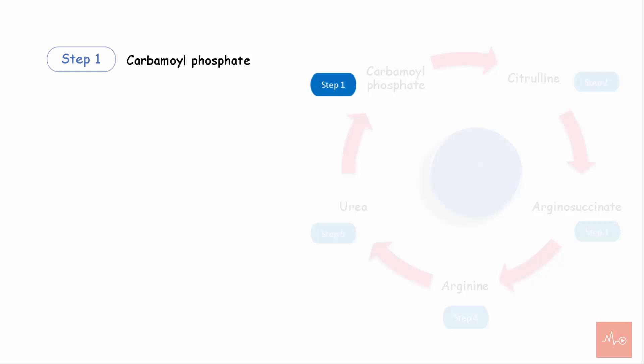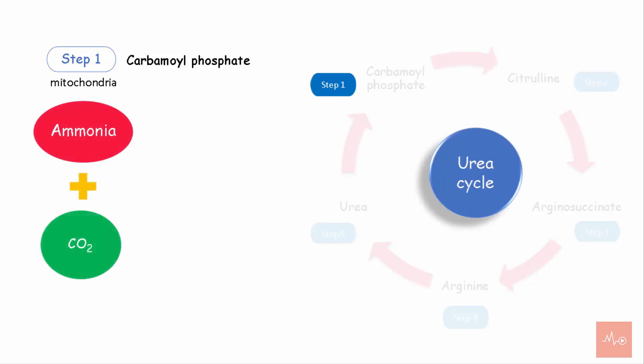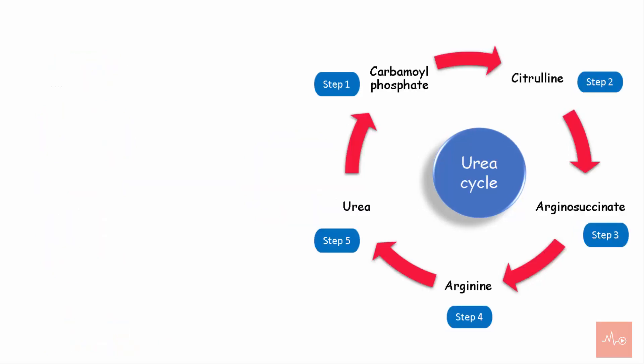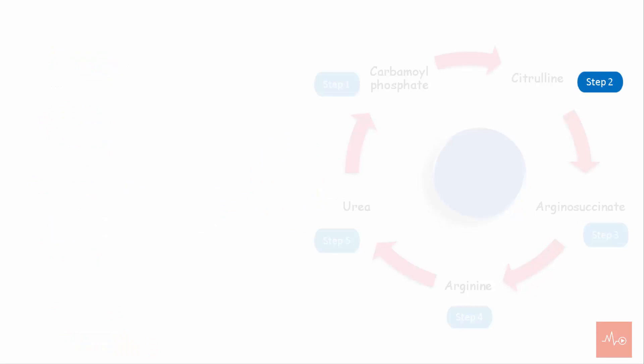...is synthesis of carbamoyl phosphate. This reaction takes place in the mitochondria. A molecule of ammonia condenses with carbon dioxide to form carbamoyl phosphate in the presence of two ATP molecules and carbamoyl phosphate synthetase 1, or the CPS1 enzyme. This is an irreversible reaction and rate-limiting. It is also the slowest step of the cycle.